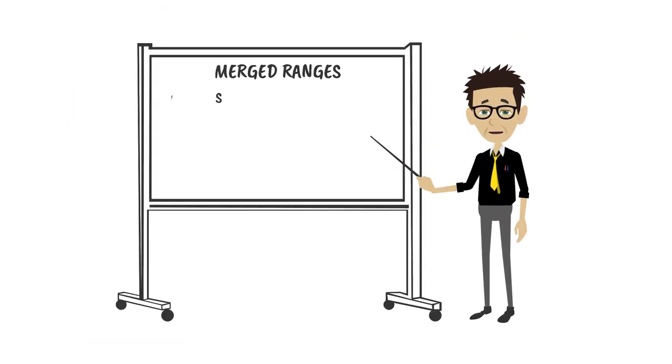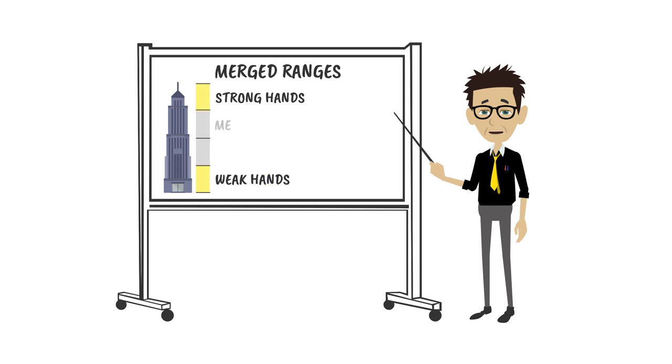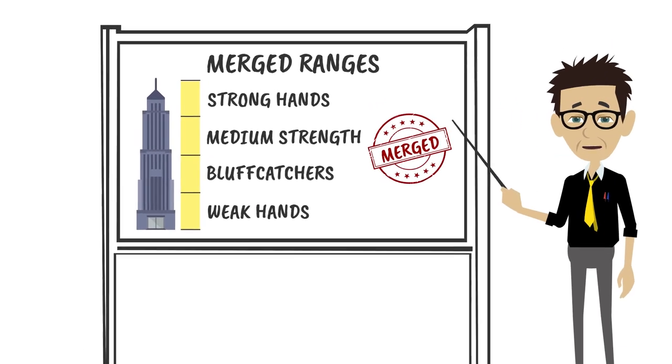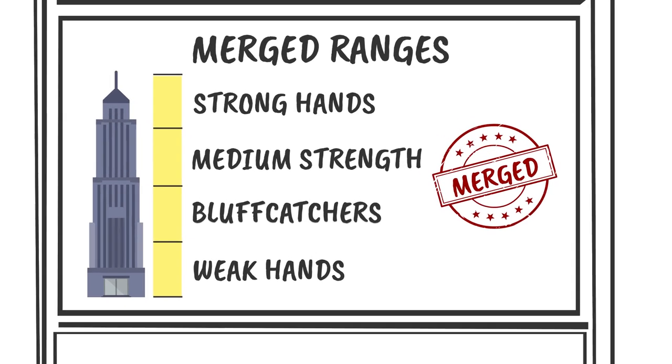The term 'merged' has a similar but slightly different application. The best way to use this term is in a context where a range should usually be polarized but instead becomes linear. If this happens, the two portions of the range shift and merge together, creating a new range. Because the term is used somewhat interchangeably with 'linear,' you won't hear us using it very often.